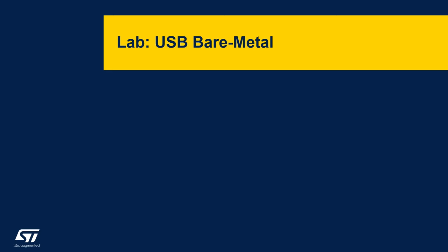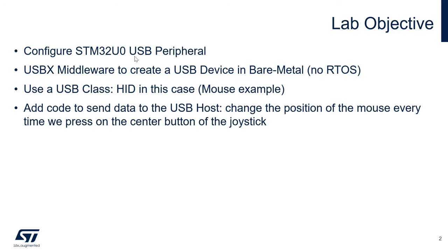This is a USB bare metal lab. We will learn how to configure the USB peripheral of the STM32 U0, then how to configure the USBx middleware to create a USB device in a bare metal way — meaning no RTOS. Since version 1.15.0 of CubeIDE and the introduction of the STM32 U0, we can create a USB device without FreeRTOS. We'll also understand the concept of USB class, using the HID class to create a USB mouse.